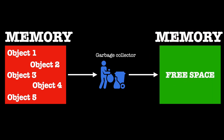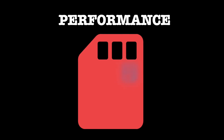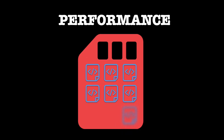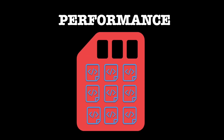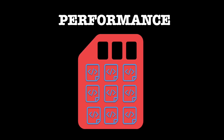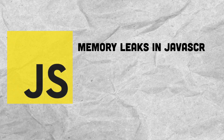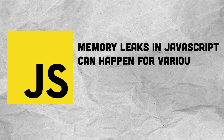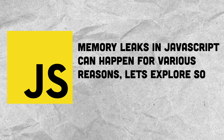If objects are not properly released, they can accumulate in memory, eventually leading to performance issues or even crashing the application due to running out of memory. Memory leaks in JavaScript can happen for various reasons — let's explore some of them.